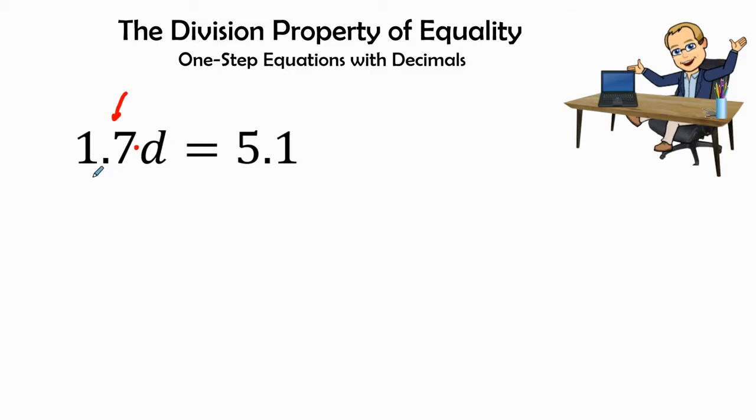The opposite of multiplication is division, so I'm going to divide both sides by 1.7.